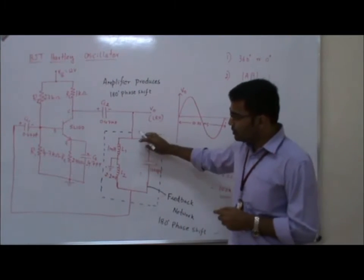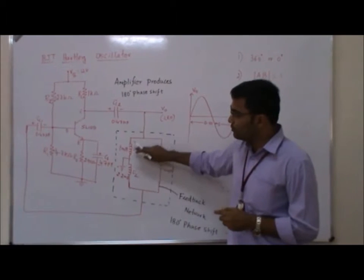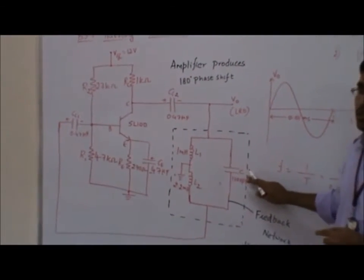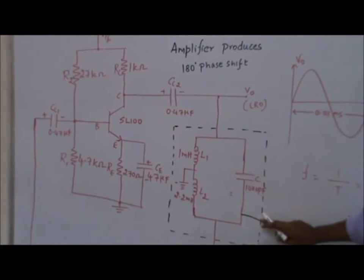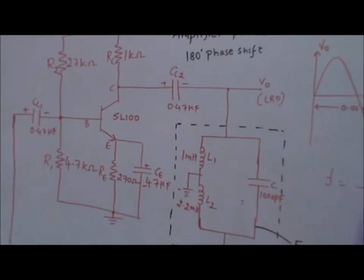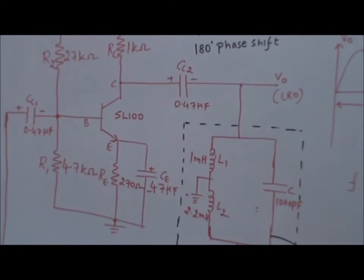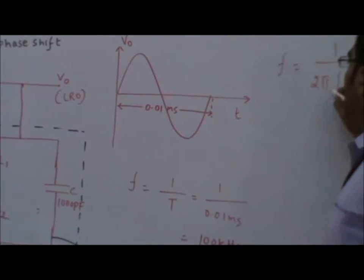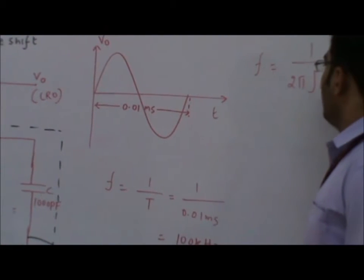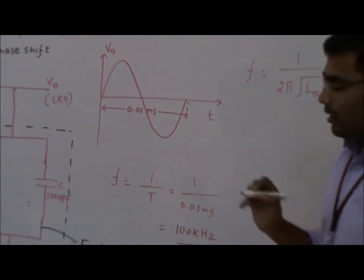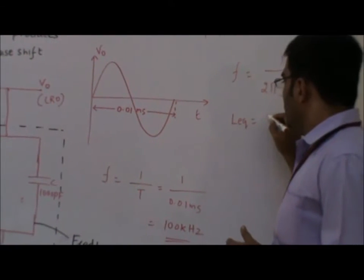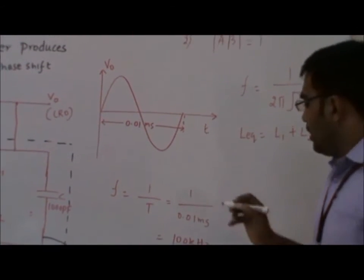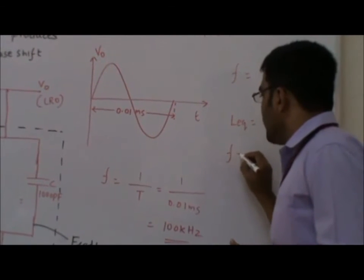In this circuit, I use two inductances L1 and L2 with values of 1 millihenry and 2.2 millihenry, connected parallel with a capacitance of 1000 picofarads. The circuit is designed for a frequency of 100 kilohertz. The frequency of oscillation is given by f = 1/(2π√(Leq × C)), where Leq = L1 + L2.